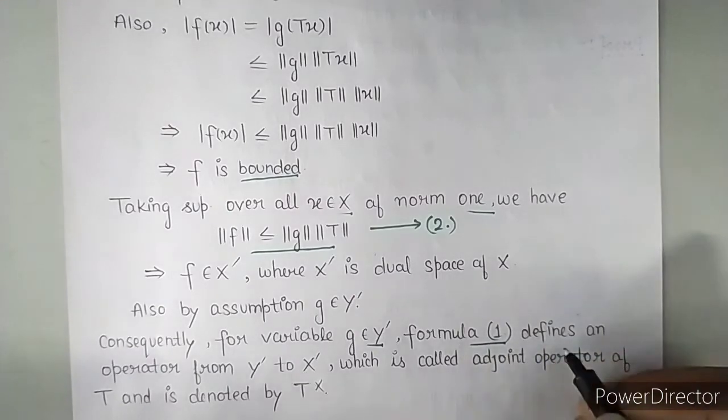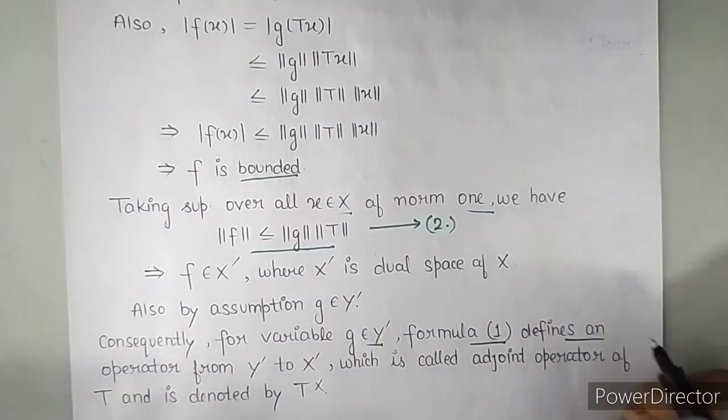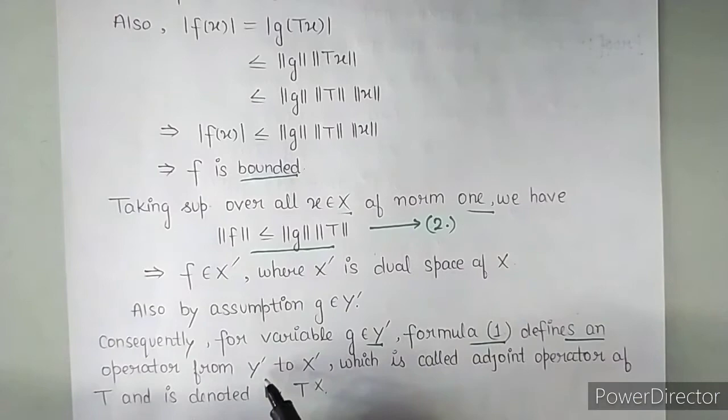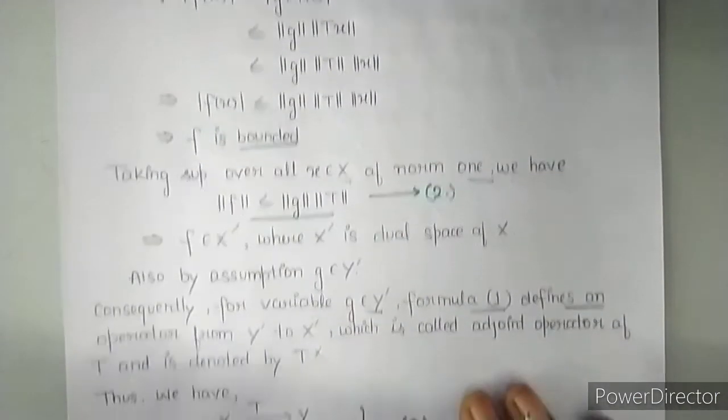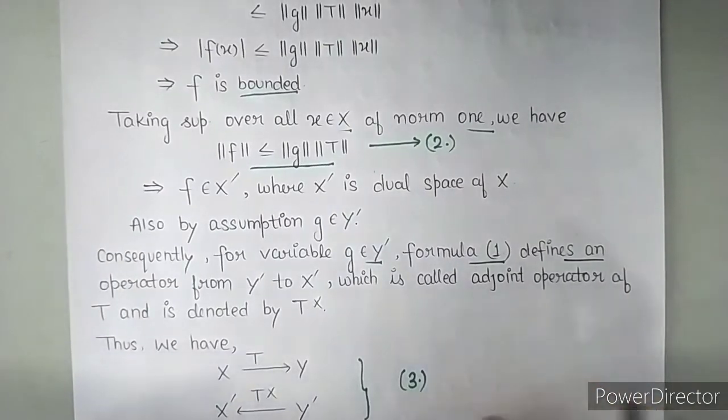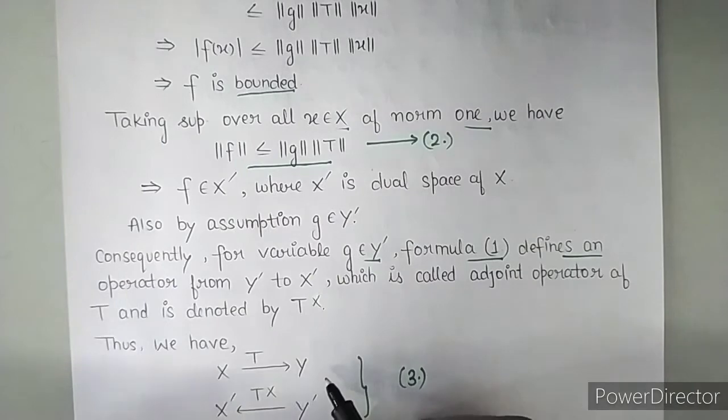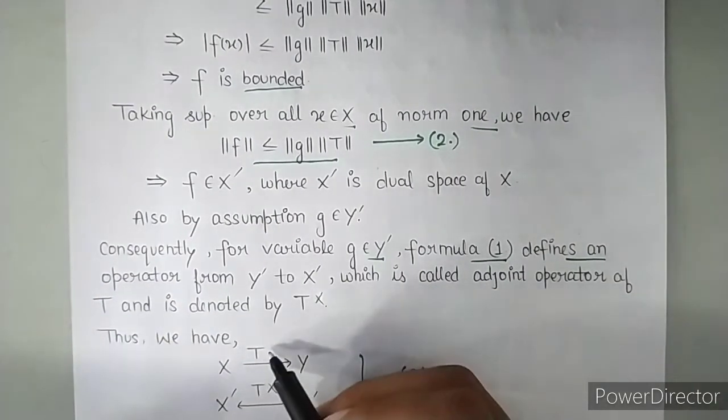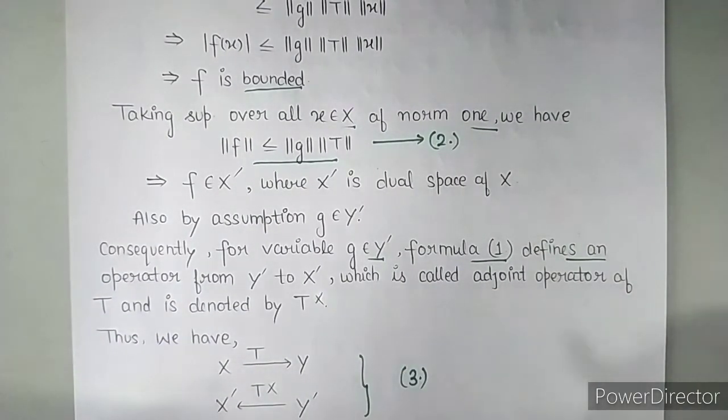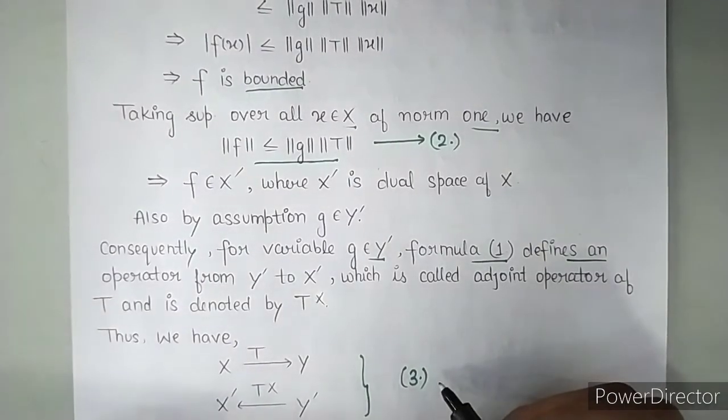So consequently for a variable G belonging to Y dash, when we took an element from the dual space of Y, this formula 1 defines an operator from Y dash to X dash which is called adjoint operator of T and is denoted by T star. So thus we have operator T acting from X to Y and now we have defined T star which goes from Y dash to X dash. And let us say this be equation number 3.